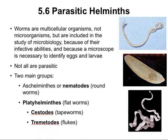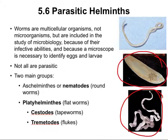The two main groups are the aschelminthes and the platyhelminthes. Recently, the term aschelminthes has been changed to nematodes, simply meaning roundworms. We haven't yet applied a more favorable word to the platyhelminthes, but this literally means flatworms and is composed of two categories. The top figure here is a roundworm — you'll notice it is round in body shape rather than flattened, as we see in the tapeworm.